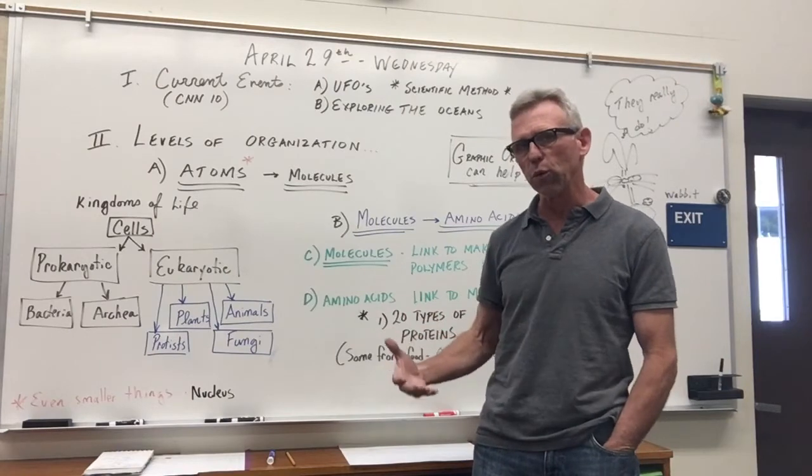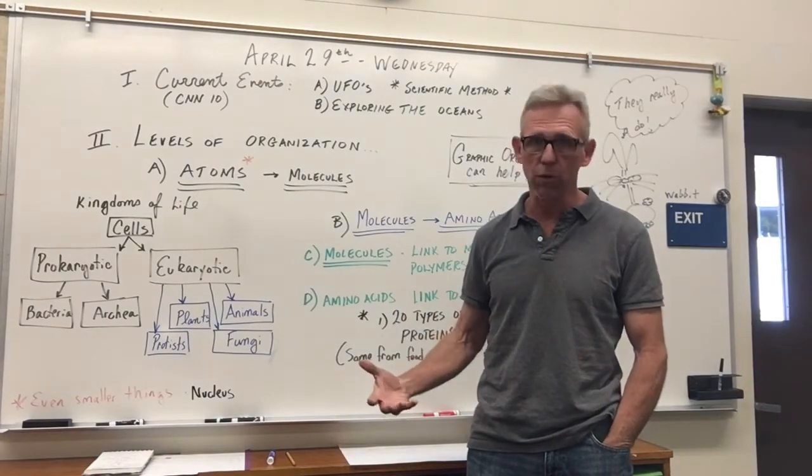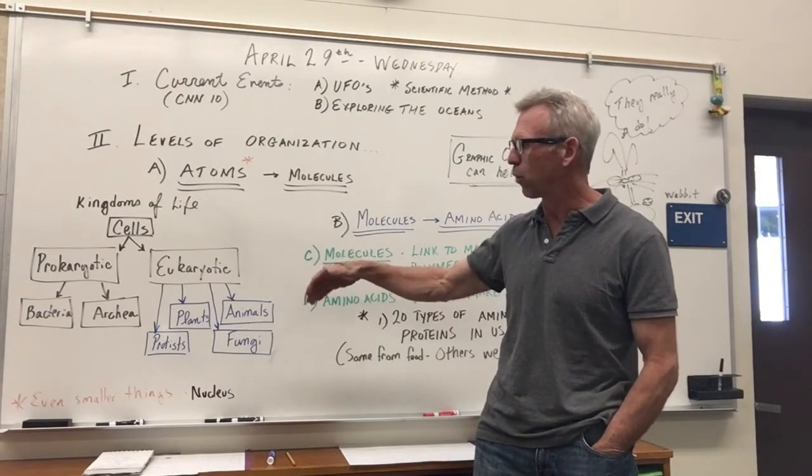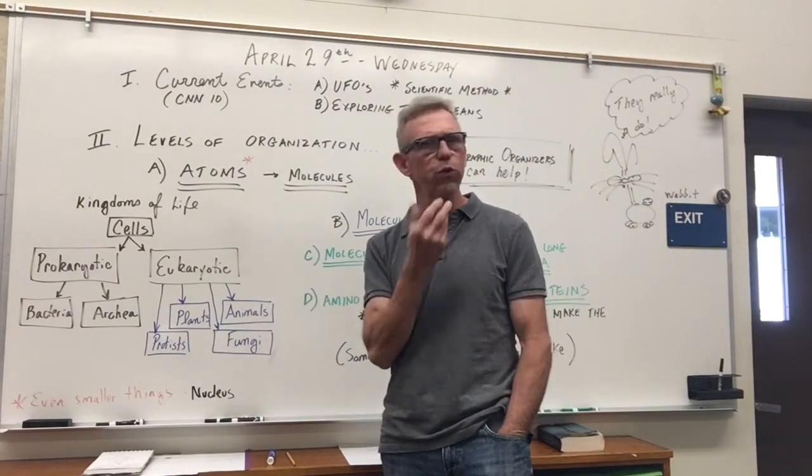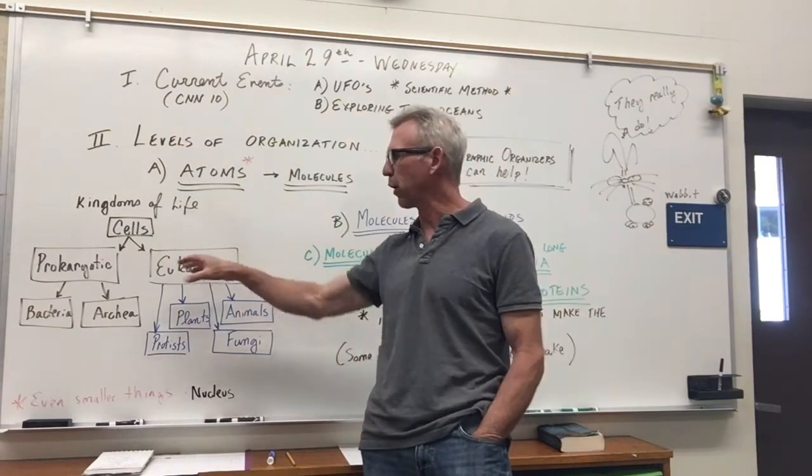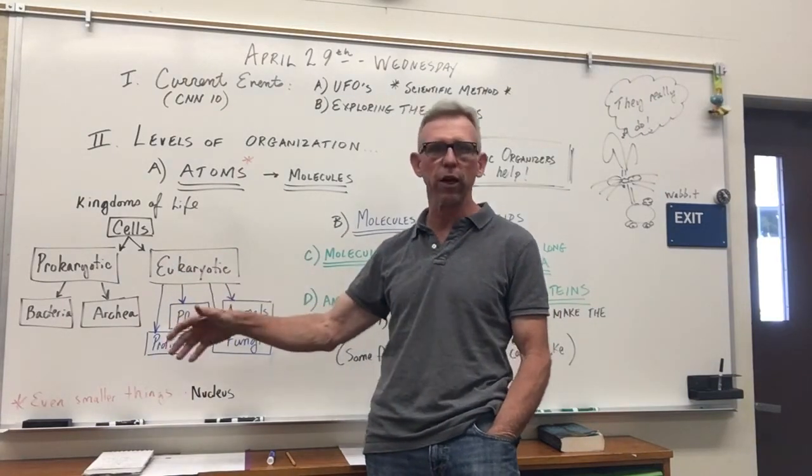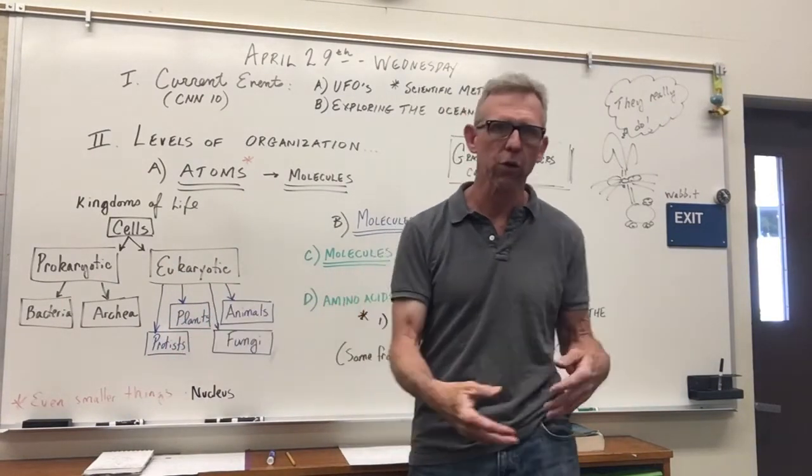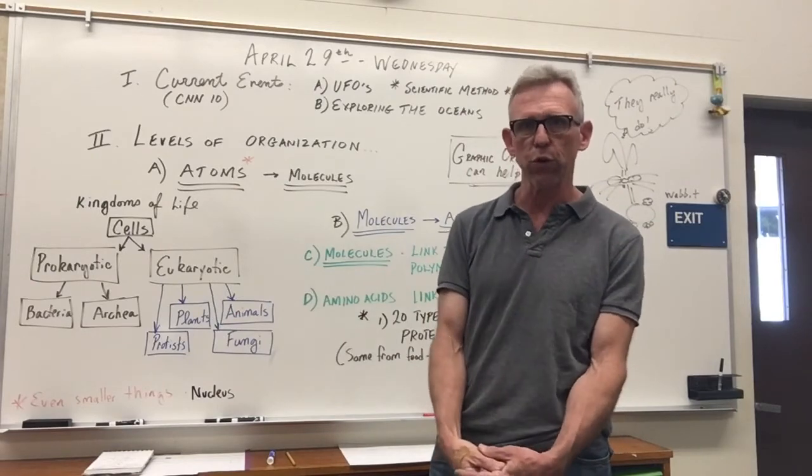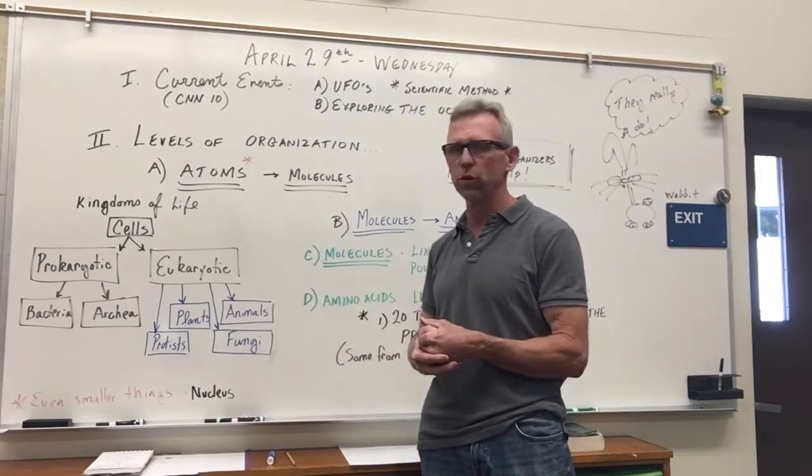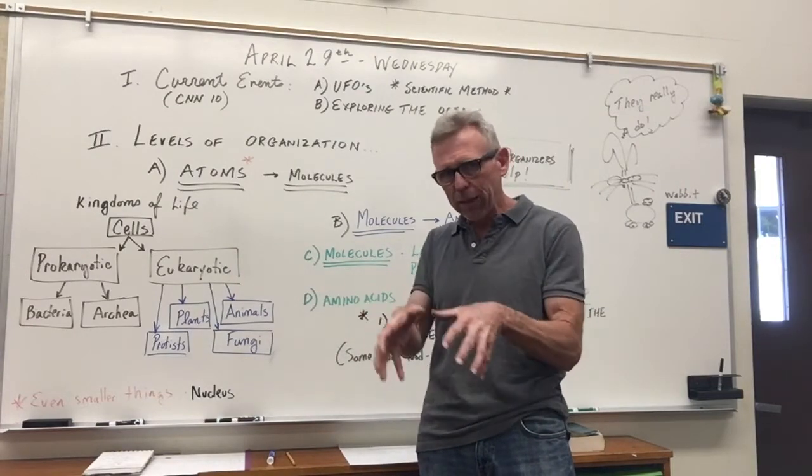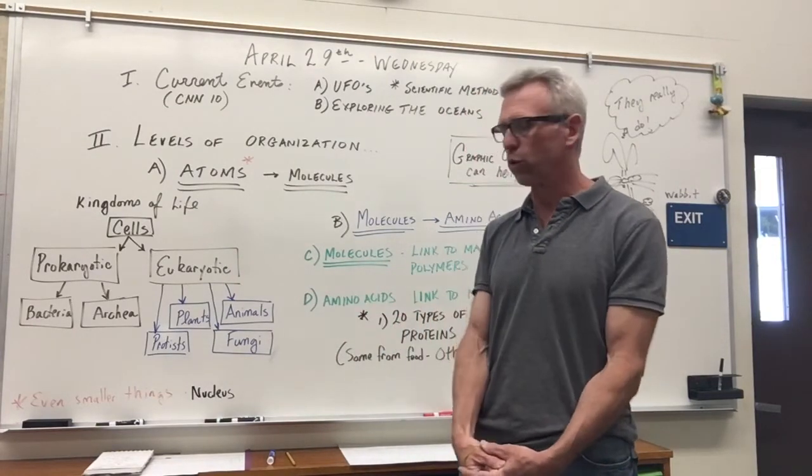Graphic organizers are a great way to help you keep track of all the stuff that we have learned, for example, about cells. Well, what types of cells are there? Well, there's two types that we've talked about in class. There's prokaryotes and eukaryotes. Prokaryotic and eukaryotic. Prokaryotes are the types of cells that don't have a nucleus. Eukaryotic cells do.